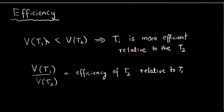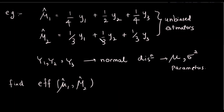Let's see the variance. T1 is relatively efficient, so T2 is efficient. T1 is estimated and we can make the efficiency. We can define V(T1) and V(T2): V(T2) is the variance of T1 estimator divided by variance of T2 estimator. So we can define efficiency of T2 relative to T1, and we can define the efficiency of T1 and T2 estimators.